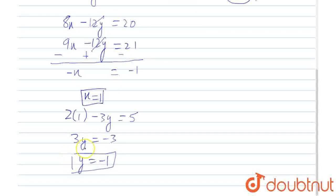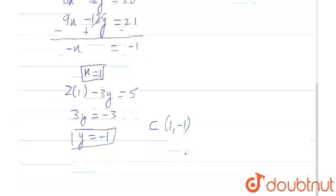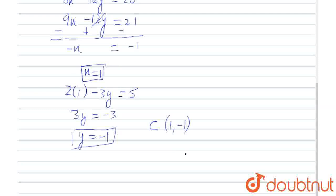So, we have got the values of x and y and as we know, this is the center and the coordinates of the center are 1 comma minus 1.